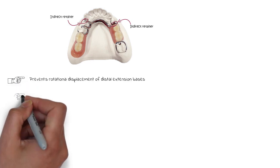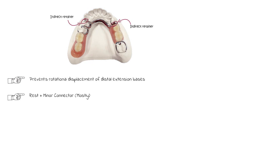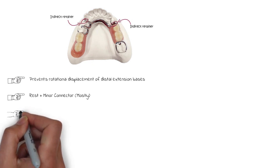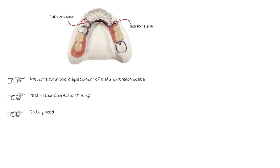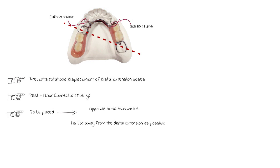In such cases, the use of indirect retainers becomes very important to avoid dislodgement. An indirect retainer basically consists of one or more occlusal rests and supporting minor connectors. When placing an indirect retainer, it should always be placed opposite to the fulcrum line, as far away from the distal extension base as possible. Theoretically the best place would be near the incisor teeth, but if they are not strong enough, the nearest canine or the mesial surface of the first molar may be used. If possible, two indirect retainers should be used to compensate for the compromised distance.